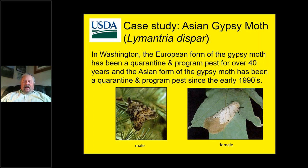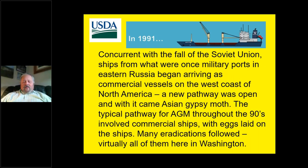The gypsy moth is not native to North America in any form. The European form was deliberately brought to Eastern North America in 1869 for well-intentioned purposes, but things did not work out. The Asian gypsy moth started causing problems decades later. One important difference: in the European form, only the males can fly; in the Asian form, both the male and the female can fly, which adds to the risk. In 1991, concurrent with the fall of the Soviet Union, ships from what were once military ports in Eastern Russia began arriving as commercial vessels on the west coast of North America. A new pathway was open, and with it came Asian gypsy moth.